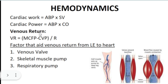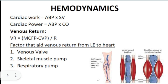For venous return: the higher the CVP, the lower the venous return, so a high MCFP is needed to increase venous return. Blood returns to the heart through the help of venous valves, which prevent backflow. Veins are pushed upward by the squeezing action of skeletal muscles, propelling blood back toward the right atrium.